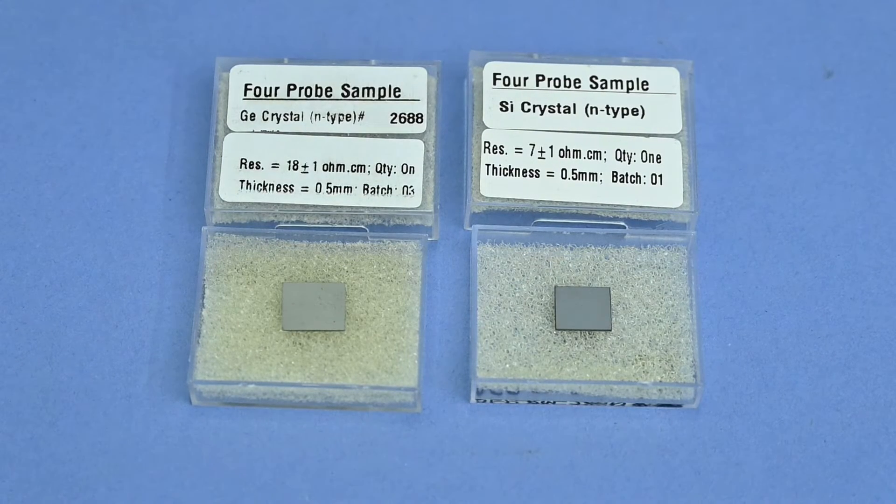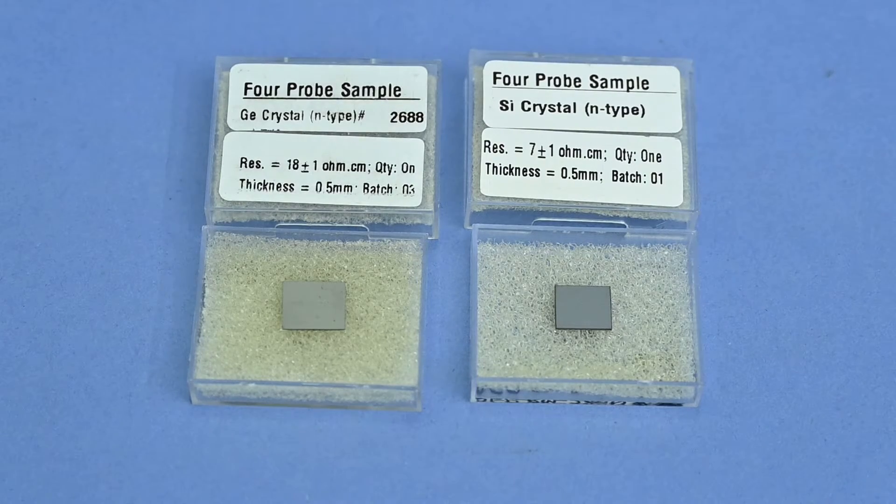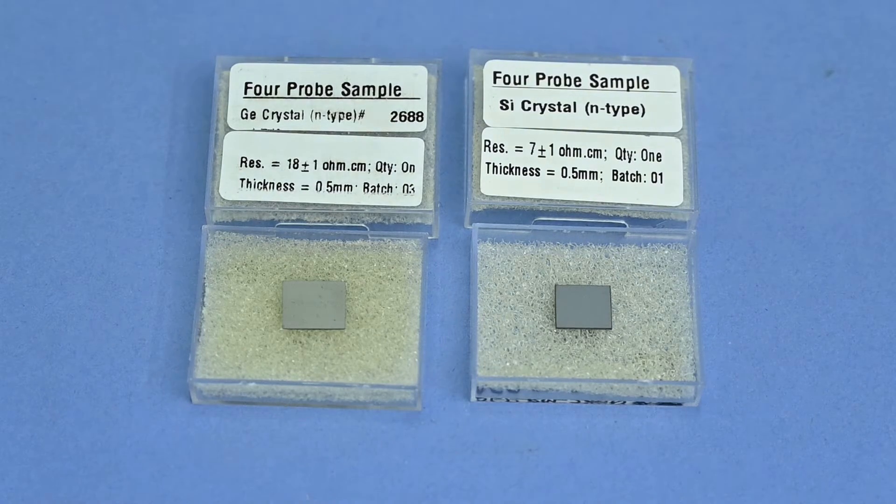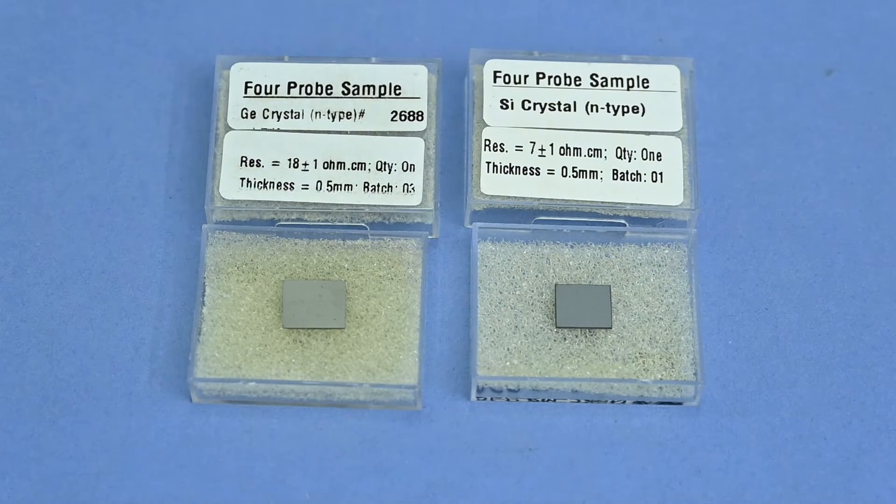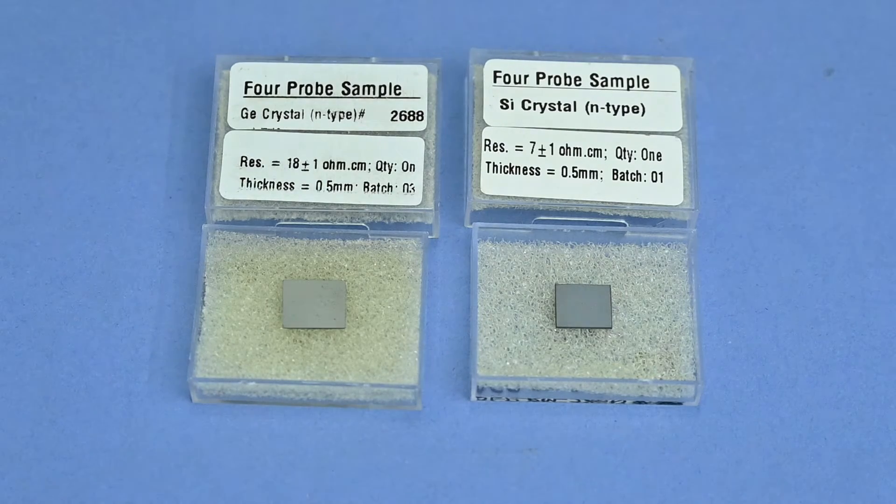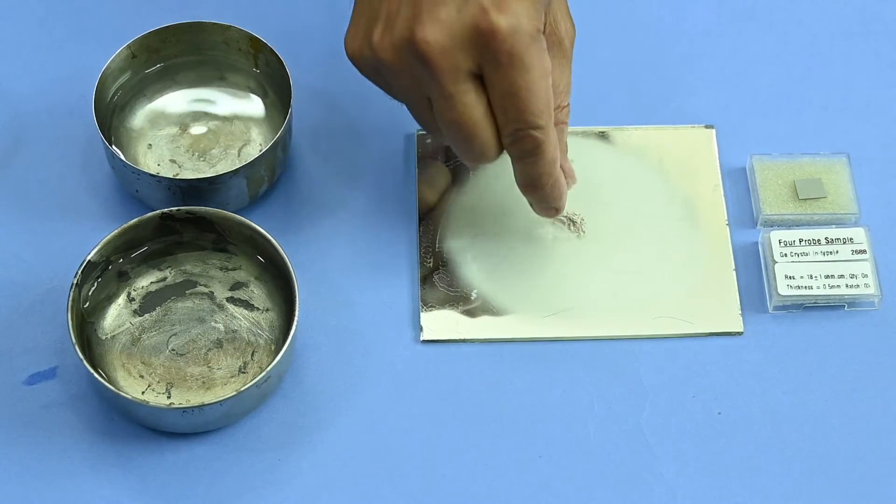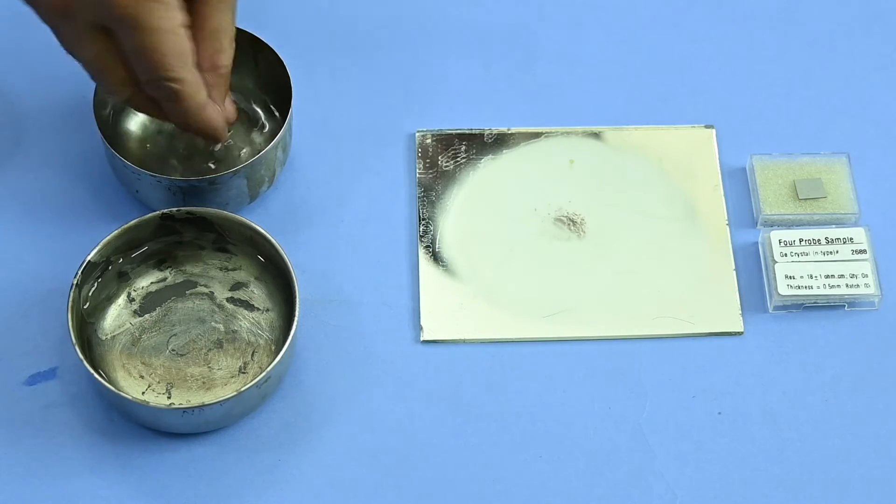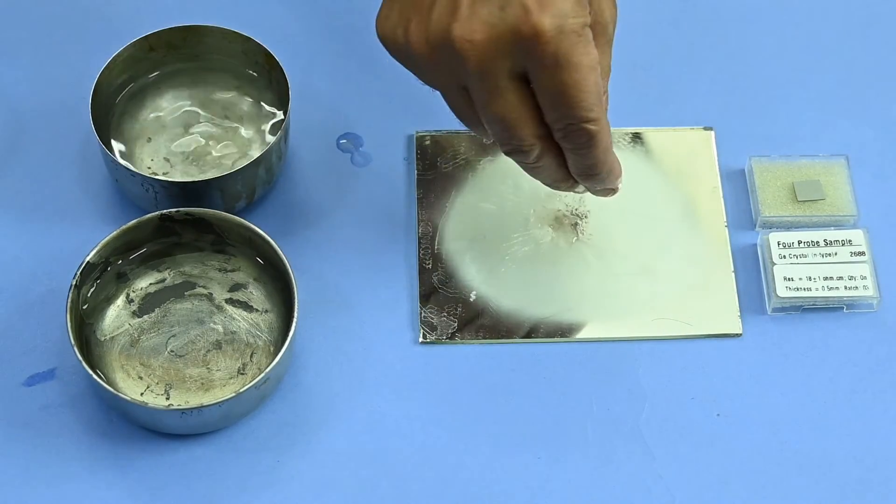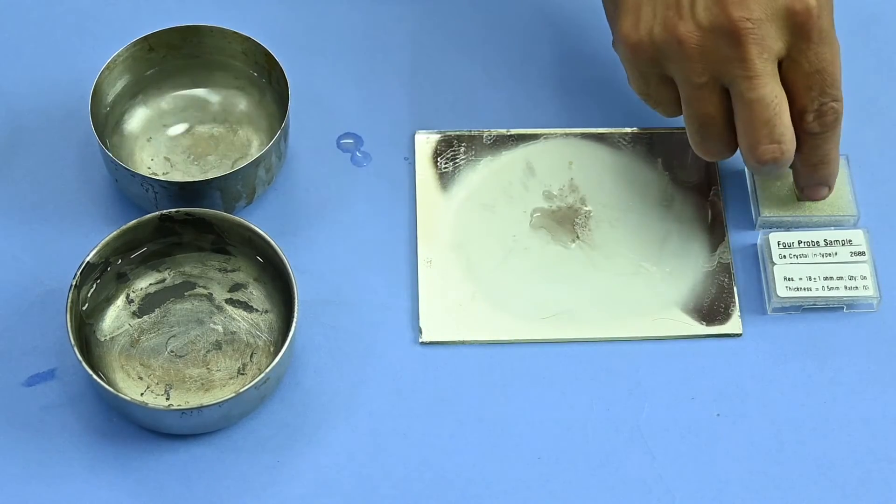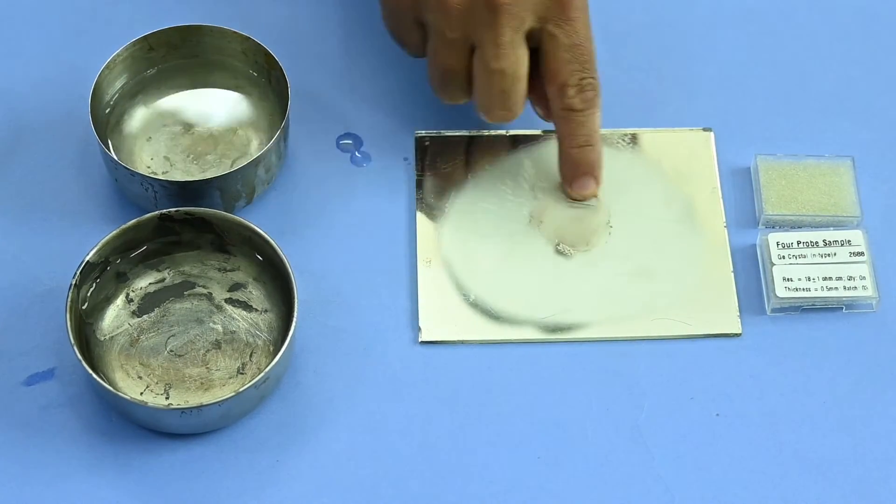Before starting the experiment, make sure the surface of the sample should be conducting. In some cases like that of germanium and silicon, an oxidation layer is formed due to atmosphere which causes error in readings. Remove this layer by gently rubbing the sample against glass surface with a pinch of emery powder and a drop of water for one minute. Thereafter, clean the sample in running water and dry it.